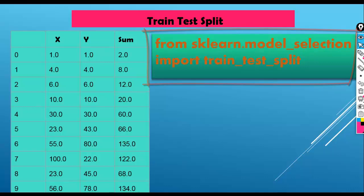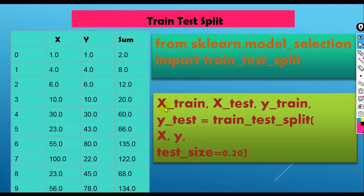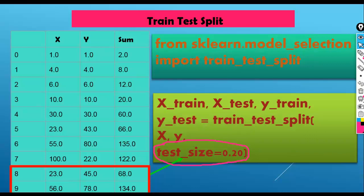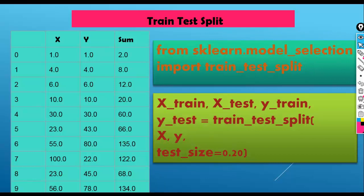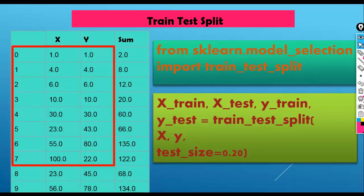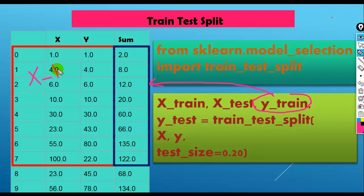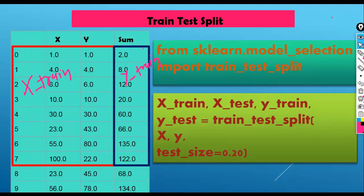This train_test_split divides our data into four parts: one independent and dependent pair for the training set and one independent and dependent pair for the testing set. With test_size equal to 0.20, we are keeping aside 20% data for testing purpose. The four parts are X_train, Y_train, X_test, and Y_test. X_train contains the independent variables of the training set and Y_train contains the dependent variables of the training set.